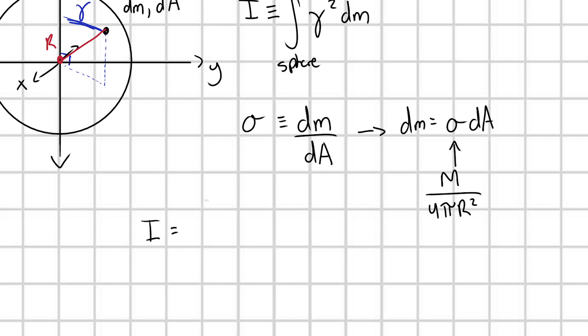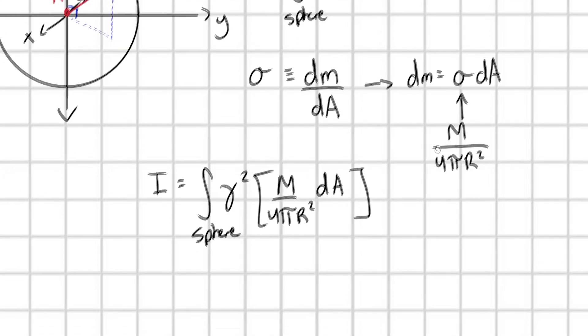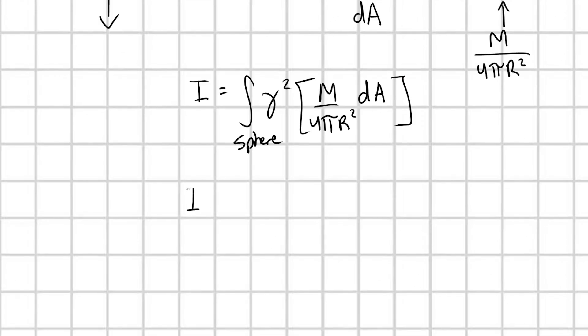We have I is equal to the integral over my sphere of gamma squared, plug this right in M over 4 pi R squared dA. I'm plugging this right in just for clarity. But of course, we know that we can take this constant out. I is equal to M over 4 pi R squared take this right out of the integral over my sphere of gamma squared. And I'm going to leave dA blank for a second. We need to figure out what dA is. And in order to do that, we need to think about our coordinate system.